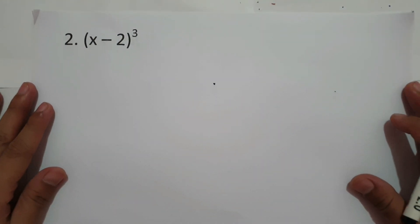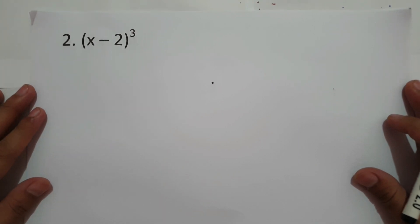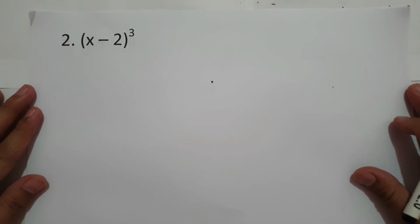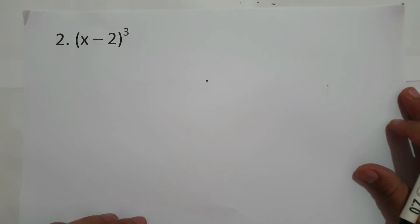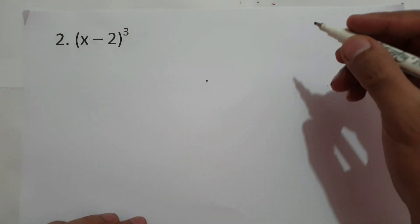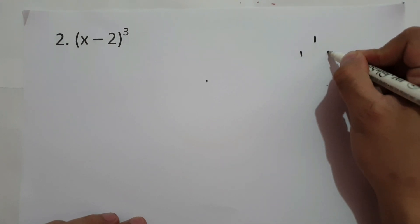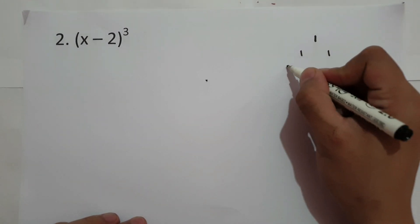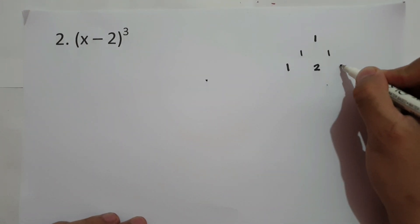On number 2, we have (x minus 2) raised to 3. This time we are going to solve this one using Pascal's triangle. First, let us determine the coefficients to use to expand this binomial. In Pascal's triangle, we have 1 and 1 on both sides in the first row. In the second row, we have 1, then 1 plus 1 is 2, then 1.